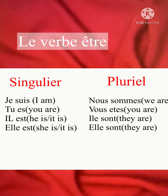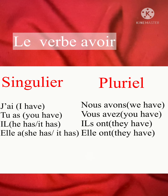The verb être — 'je suis' means 'I am', 'tu es' means 'you are', 'il est' means 'he is' or 'it is', 'elle est' means 'she is' or 'it is', 'nous sommes' means 'we are', 'vous êtes' means 'you are', 'ils sont' means 'they are', and 'elles sont' also means 'they are'.